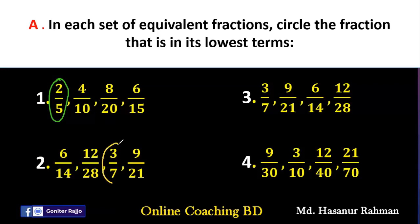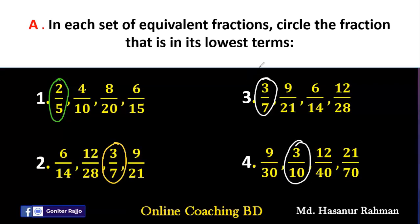Similarly, 3/7 will be the lowest fraction — we can say 3/7 is the lowest one. Very simple; we can easily identify this one. Number 4 answer will be 3/10. So here we will easily find out which one is the lowest term, and after finding out the lowest term, we will circle the fraction.